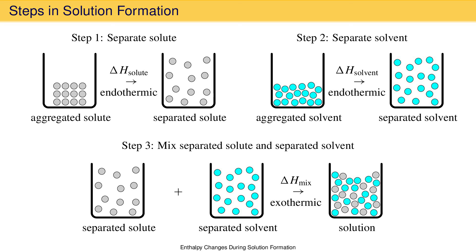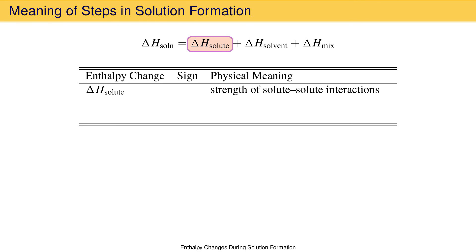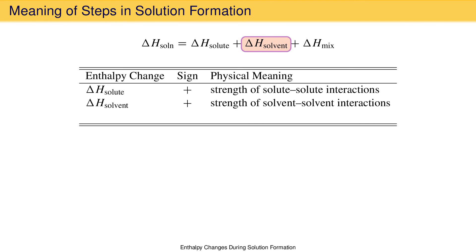We start with aggregated solute and aggregated solvent and end with solution, just as in the one-step process, but now in three steps. What we have gained is a model for thinking about the energy changes during solution formation. We can now think of delta H solution as a sum of three enthalpy changes: delta H solute for separating solute particles, delta H solvent for separating solvent particles, and delta H mix for when separated solute and solvent particles interact and form associations. Delta H solute represents the strength of solute-solute interactions and is always positive. Delta H solvent represents the strength of solvent-solvent interactions and is also always positive. Delta H mix represents the strength of solute-solvent interactions and is always negative — more negative the stronger the solute-solvent interactions.